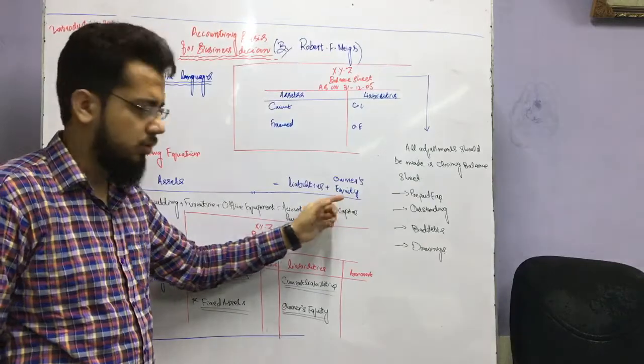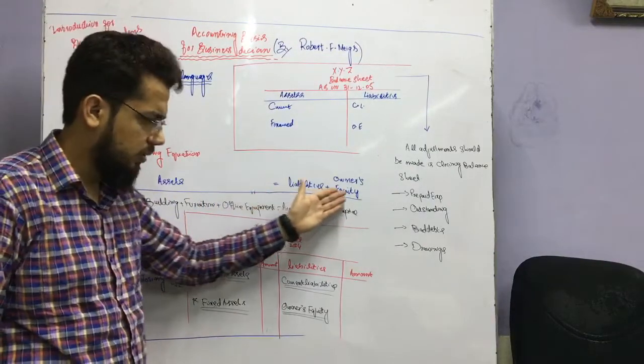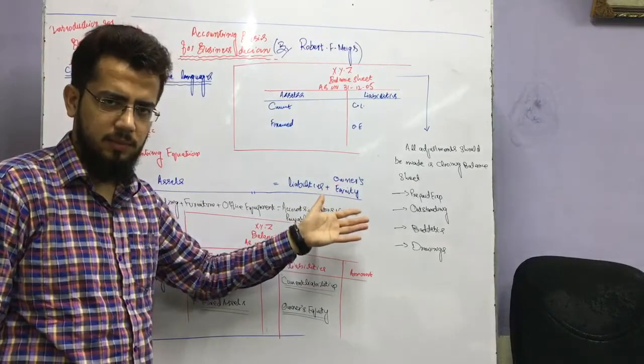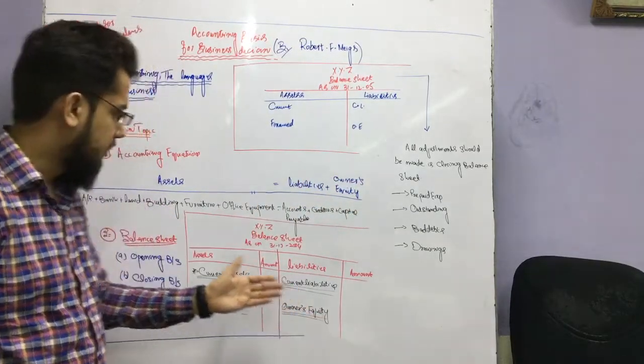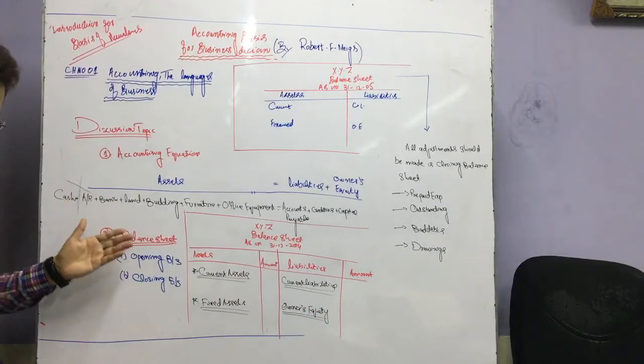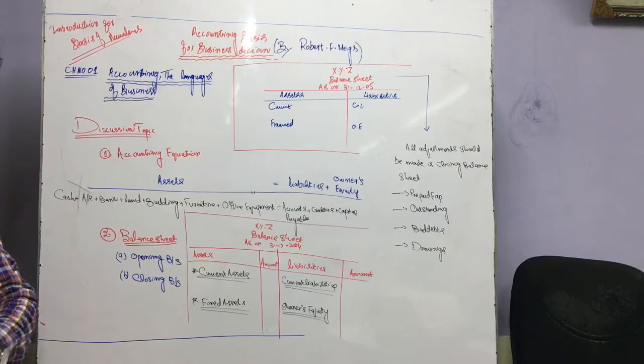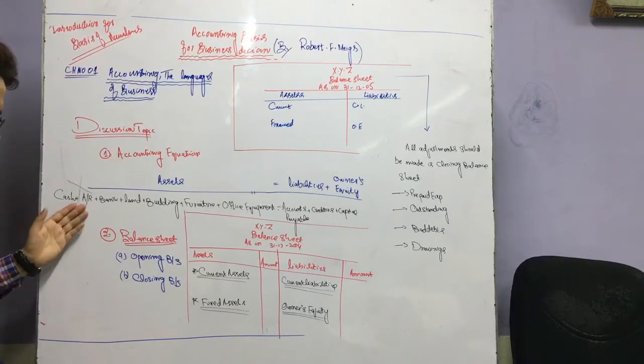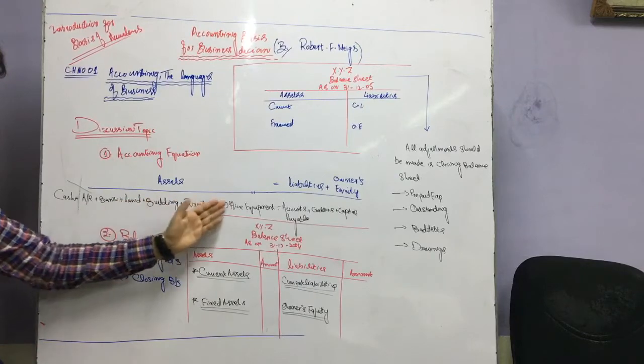Let's try to give the asset side and liabilities and owner's equity so that your assets can be in a sequence form. Assets can come from accounting equation here. Your assets: account receivable, bank, fixed assets, land, furniture, office.